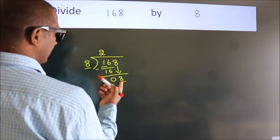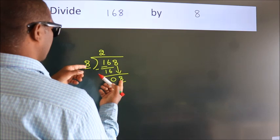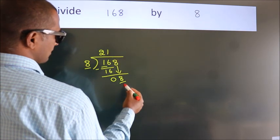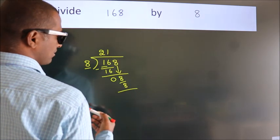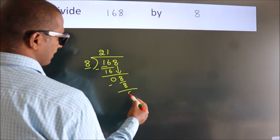When do we get 8? In the 8 table. 8 once, 8. Now we subtract. We get 0.